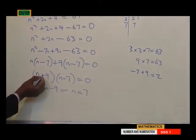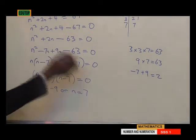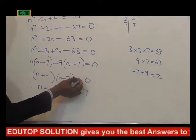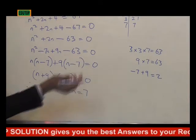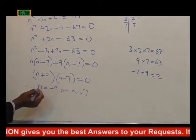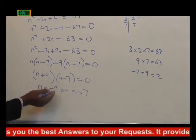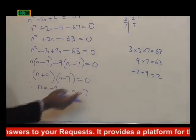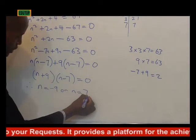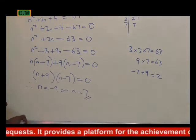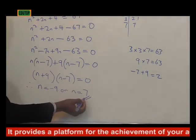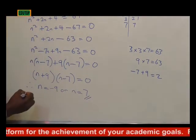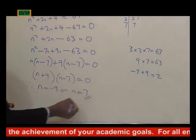At this point, the 9 crosses the equal sign and changes to negative, giving us n = minus 9. However, we cannot have a negative base. The only possibility we can have is the positive one, which means our answer is 7. We can only have 7 as our base.